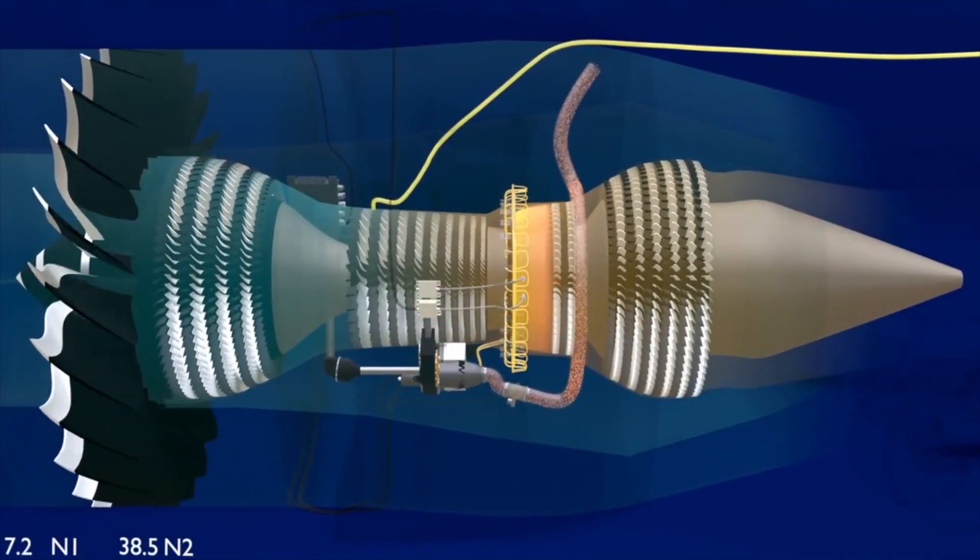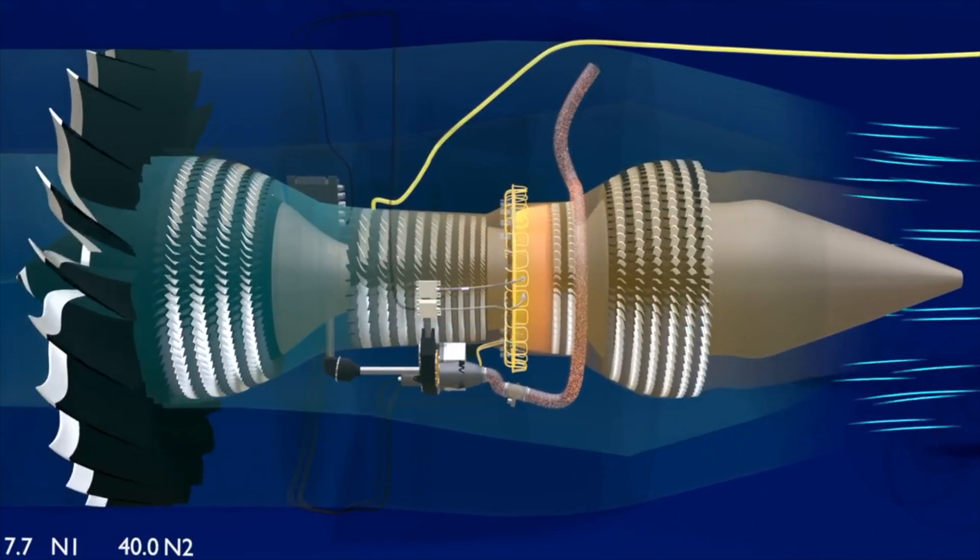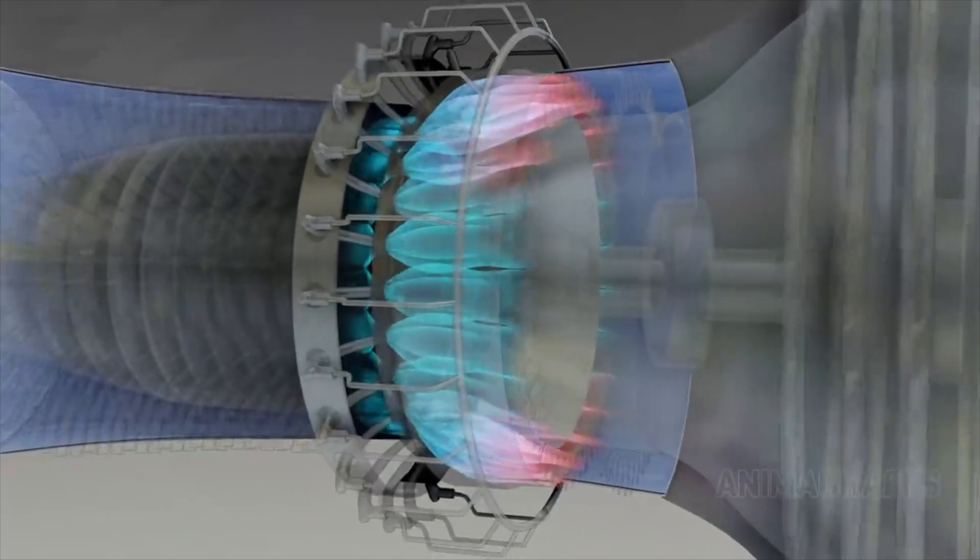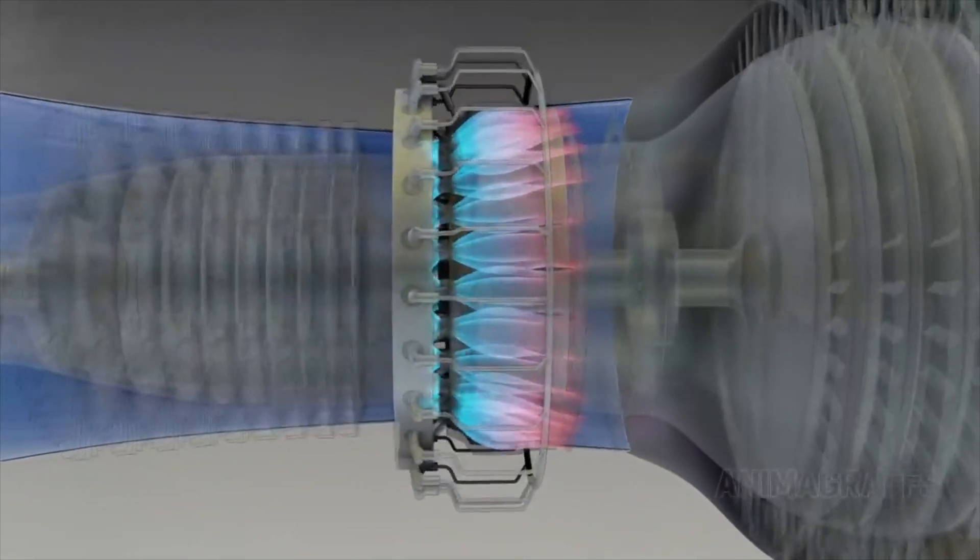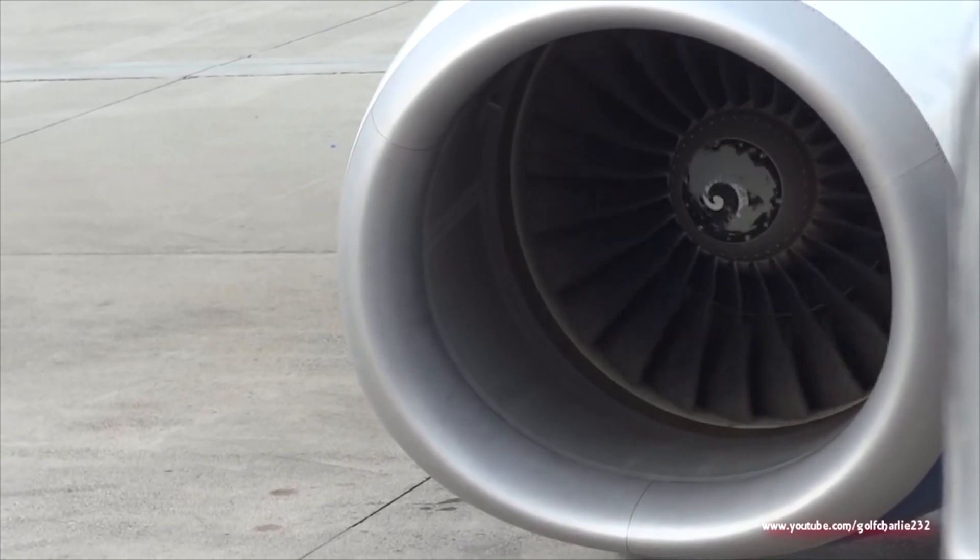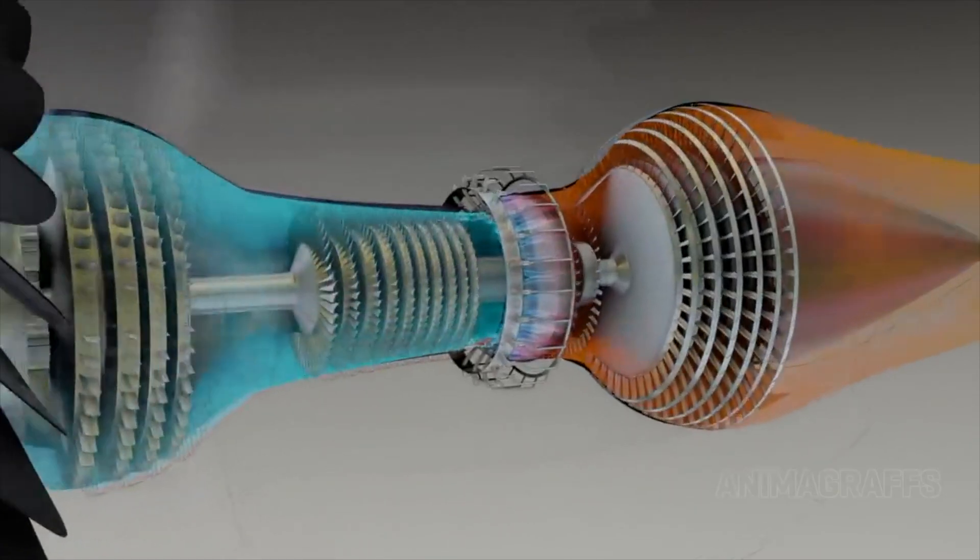As fuel is first introduced there is a sharp rise in EGT due to the presence of excess fuel in the combustion chamber compared to air. Less air means less cooling. As the engine accelerates more fuel is introduced which progressively increases the EGT.